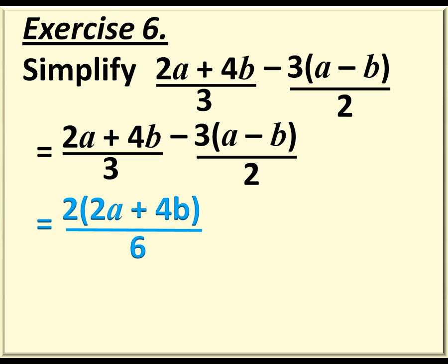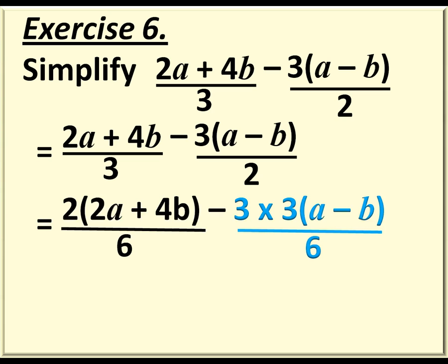Similarly, the denominator 2 also goes into 6 three times, so you have to multiply the 3 by 3 into bracket A minus B over 6.